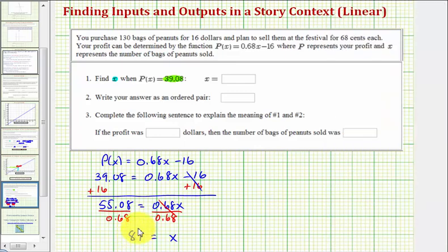So if p(x) equals 39.08, then x equals 81. We're asked to write the answer as an ordered pair again. Remember the input of the x value comes first. So we'd have (81, 39.08).